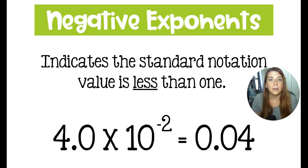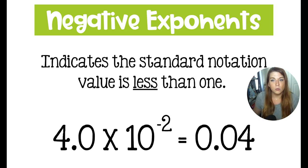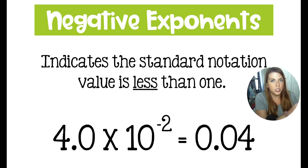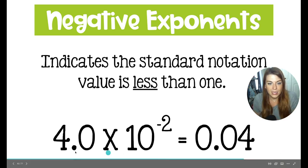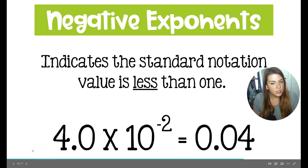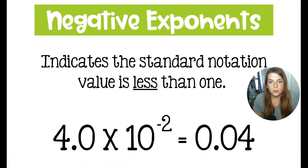Negative exponents tell us that our number is less than one. So here we have 4 times 10 to the negative second. In this case, you're going to move the decimal still two times, but you're going to move it in the direction that makes your number smaller — to the left. You move it two places: in front of the four, then once again, and you'll have a zero in front of the four. I like this leading zero — I think it helps to prevent mistakes, so I always include it.